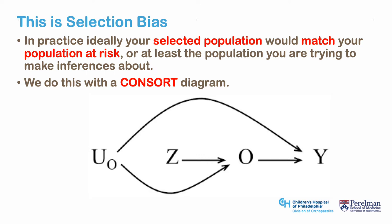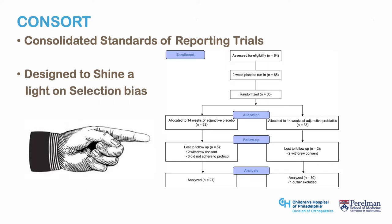Ideally, your selected population would match your population at risk, or at least the population you are trying to make inferences about. The CONSORT diagram gives the reader a sense of how cases were selected if they were not consecutive or if there were exclusions. This diagram somewhat mitigates selection bias, though it still does not report cases not diagnosed due to ascertainment bias, but it demonstrates to a reader that cases were not hand-picked to show a specific outcome.